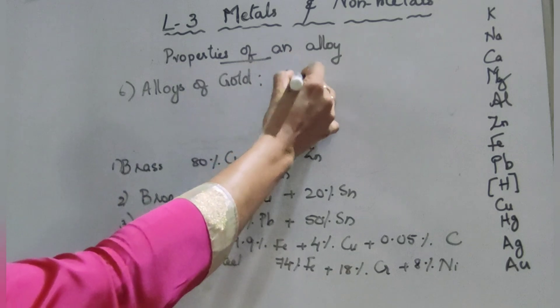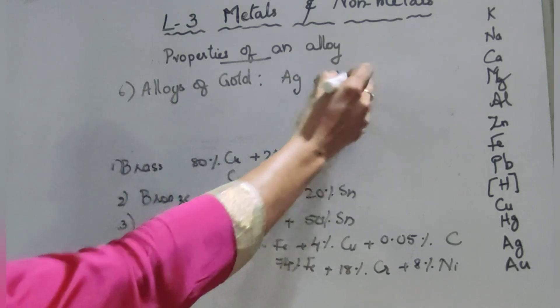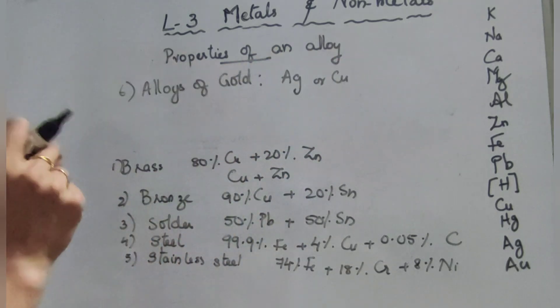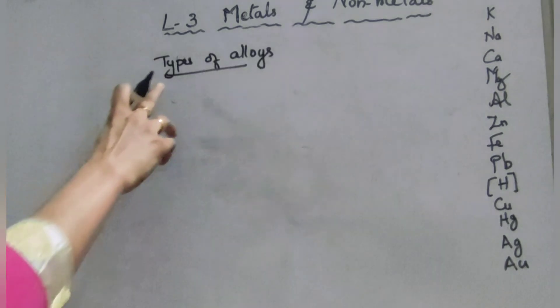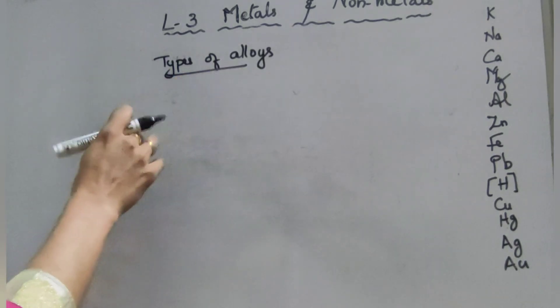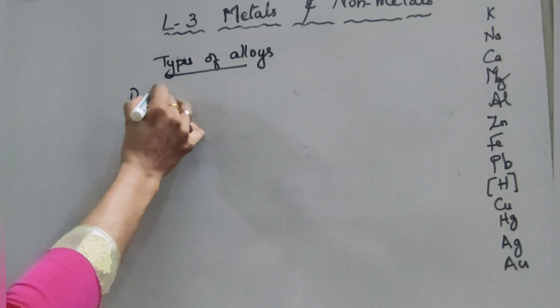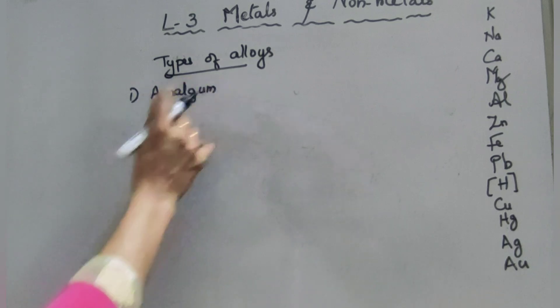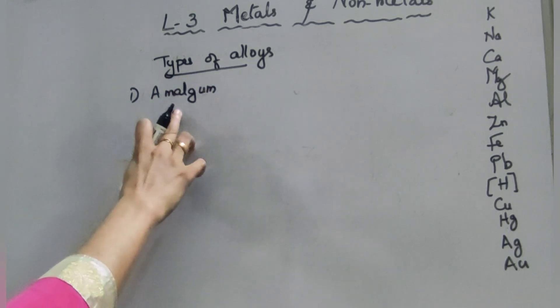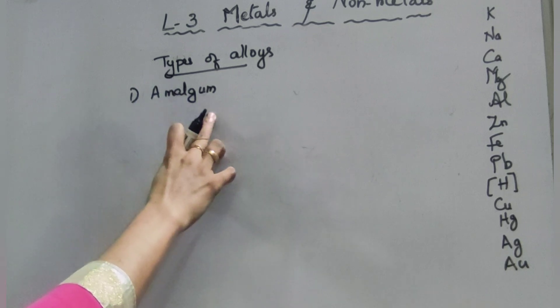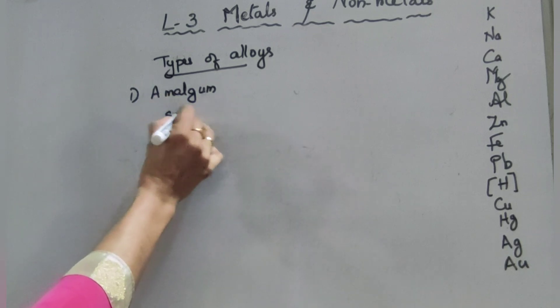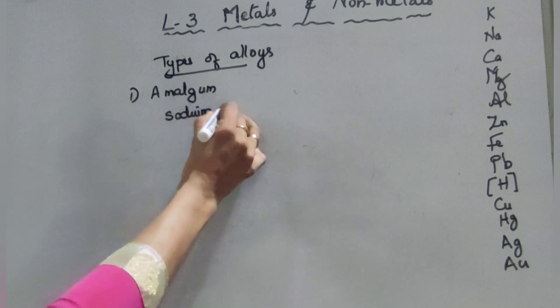The last topic: types of alloys. The first type of alloys is amalgam. Amalgam means an alloy in which mercury is present. Here sodium amalgam is there, sodium amalgam.